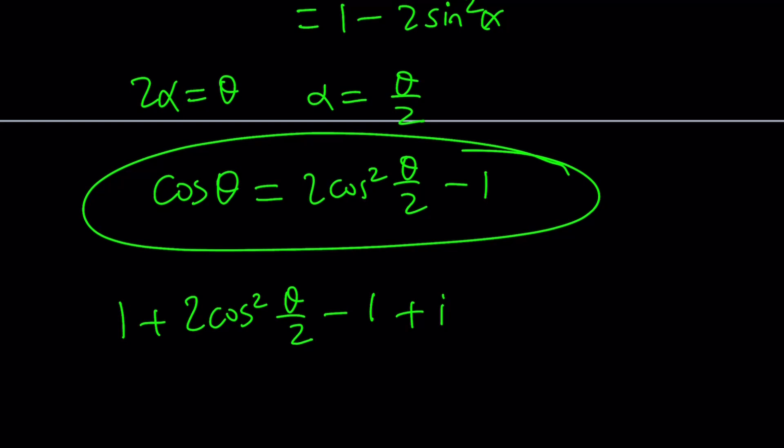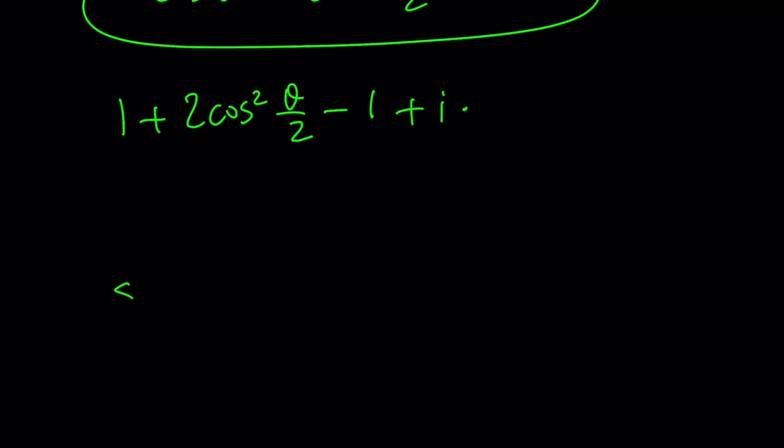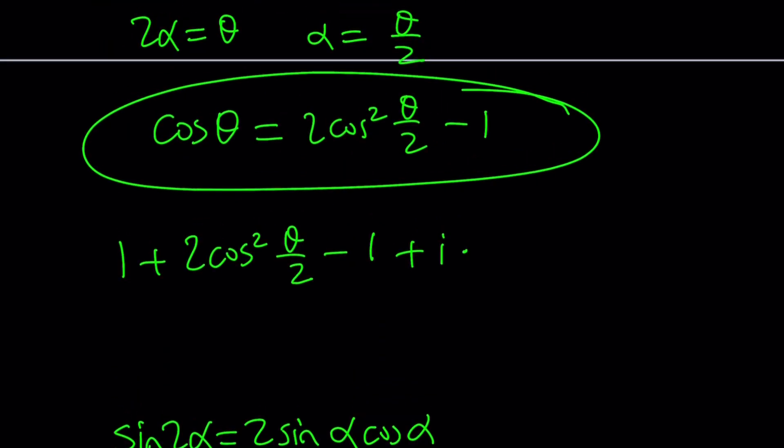For sine theta, I have another trick, which is again the double angle formula, and that double angle formula is as follows. Remember, sine 2 alpha is 2 sine alpha cosine alpha. Replace alpha with theta over 2, you're going to get sine theta is 2 sine theta over 2 times cosine theta over 2. Make sense? That's what we're going to plug in, and everything will be awesome.